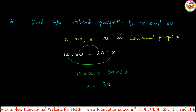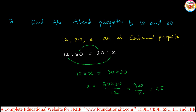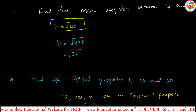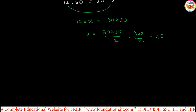Then x equals 30 into 30 divided by 12. Simplifying: 900 divided by 12 gives 75. So 75 is the third proportion value. This covers proportion and continued proportion combined. Whenever they ask for the third proportion, second proportion, or mean proportion, you can use continued proportions.